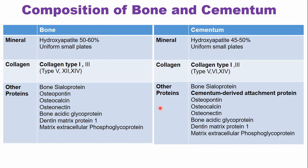In the case of cementum, it is slightly less mineralized compared to bone: 45 to 50 percent mineral, 30 percent organic material, and around 22 percent water. It also comprises type 1 collagen fibers with a smaller amount of type 3 collagen fibers. The non-collagenous proteins are similar, but there are also some cementum-specific proteins such as cementum-derived attachment proteins.